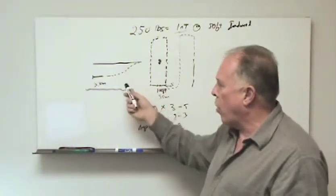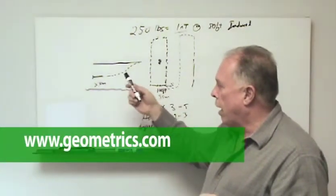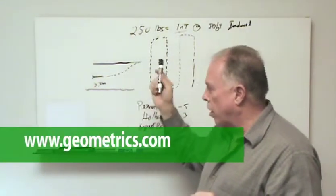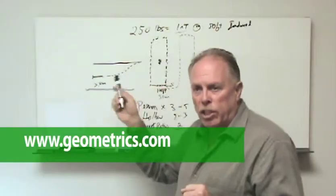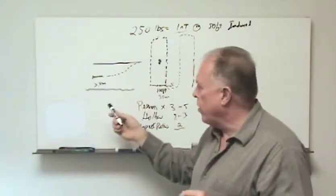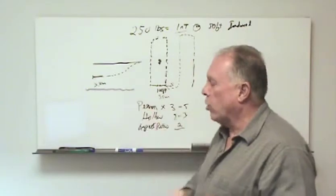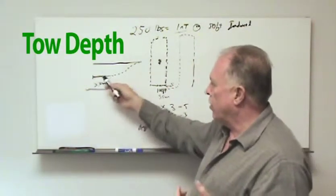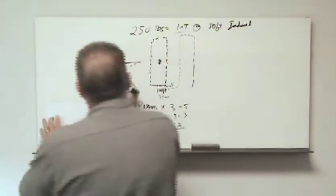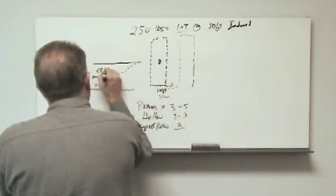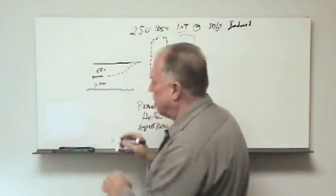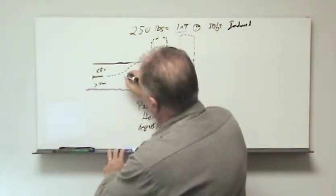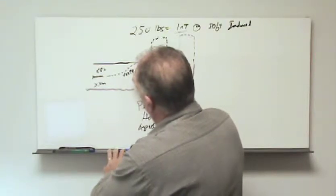We do have on our website under magnetometers, under marine magnetometers, under G882, there is an applet called tow depth. And tow depth is a program that will allow us to put in the type of magnetometer, in this case an 882, put in the type of cable, in this case an aramid fiber vectran cable or Kevlar cable.